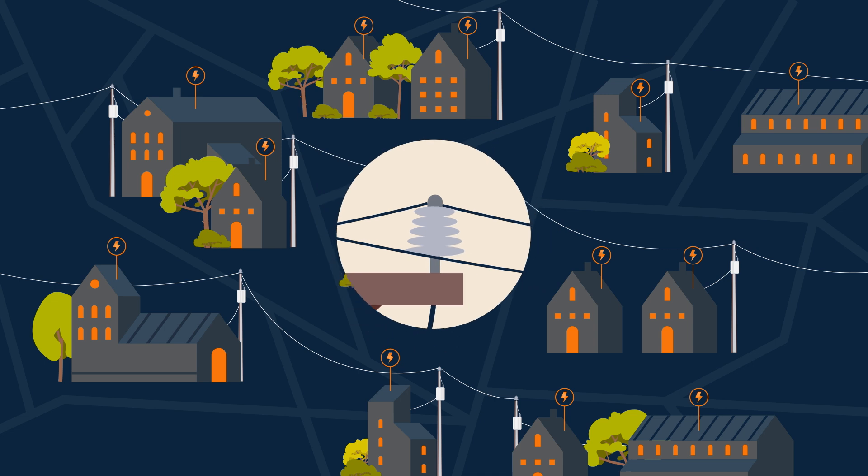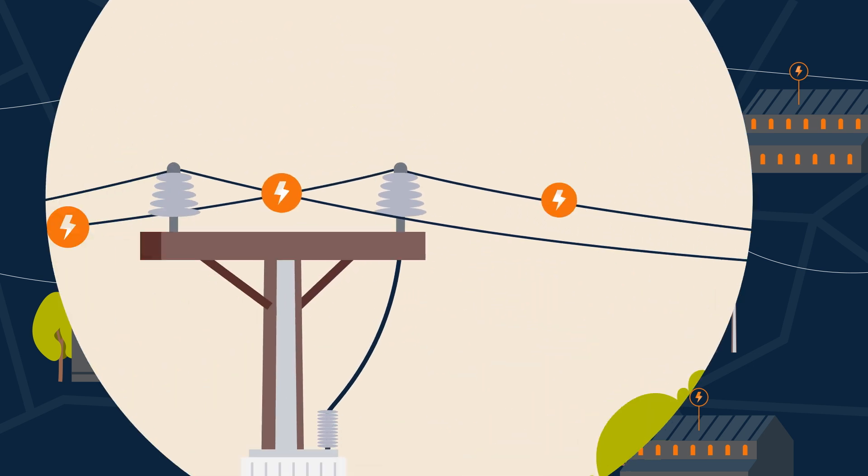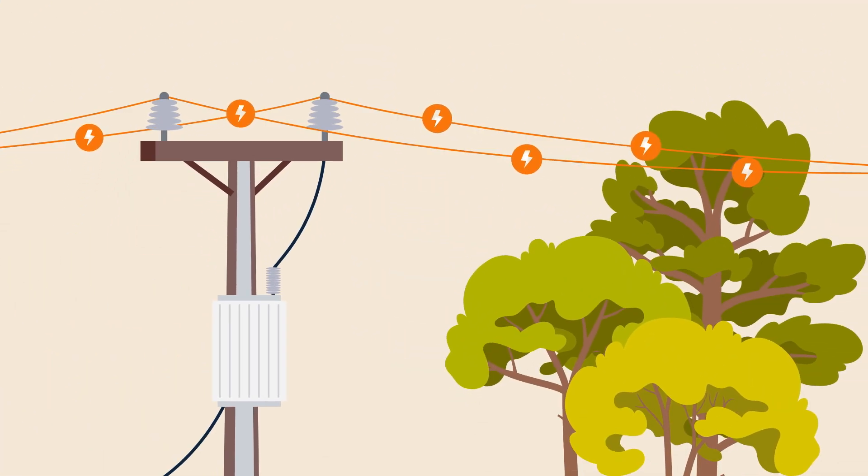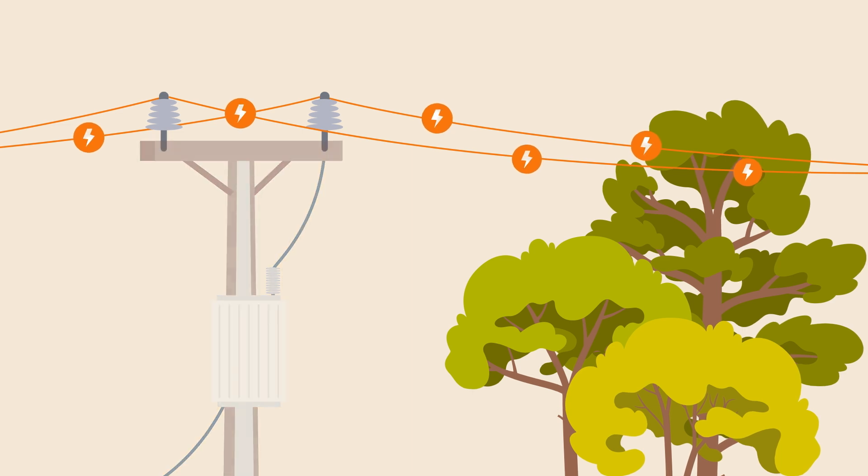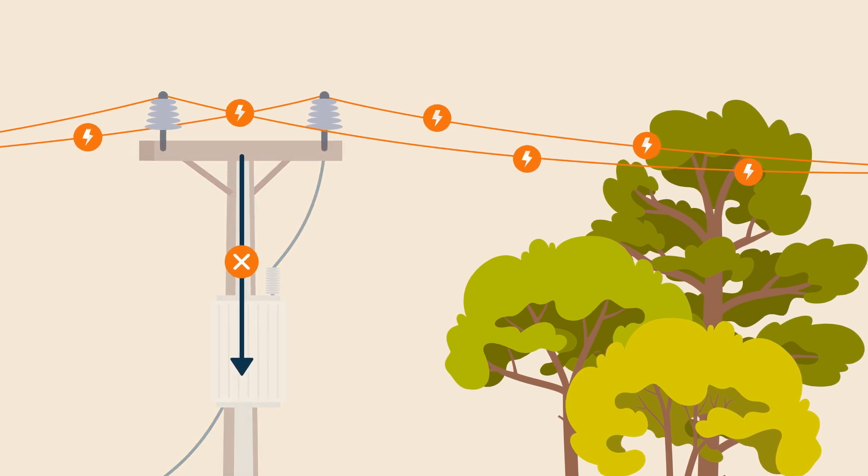Insulators are crucial components of our power grid. Their job is to isolate the live electrical conductors from our pole top equipment, preventing electricity from flowing down the Stobie pole and into the ground.